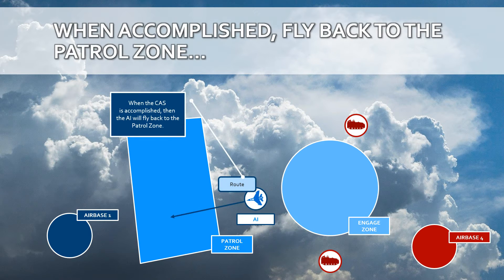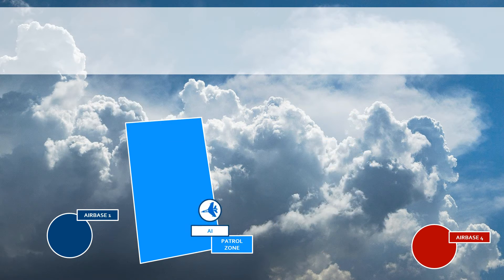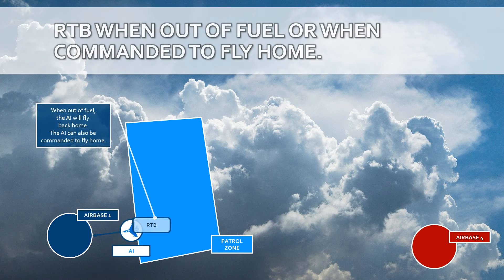The AI will fly back to the patrol zone when the mission is accomplished. When the AI is out of fuel, commanded to return to base, or heavily damaged, it will return to base and the process will finish.